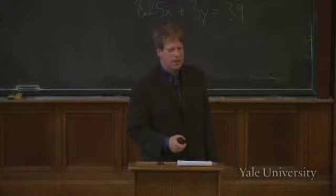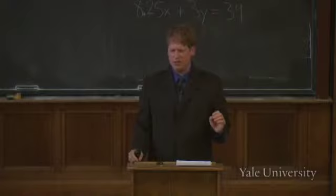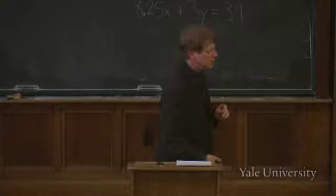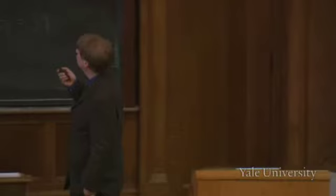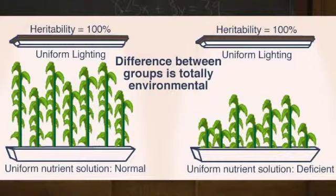The question is: does high heritability within individuals mean there must be a heritable explanation for group differences? The answer is not at all. Richard Lewontin illustrated this with two plots of seeds: one fertilized a lot, one fertilized a little. Within each plot, how much a seed grows is largely determined by its genetics—high heritability within plots. But the difference between the two plots has no genetic cause at all—it's caused by which plot received more fertilizer. Within-group heritability tells you nothing about between-group differences.